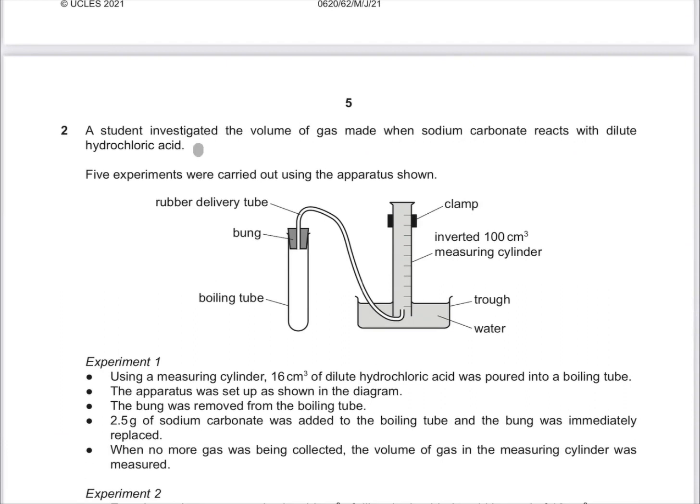Hydrogen sulfate is made with sodium carbonate and hydrochloric acid. Five experiments were carried out using the apparatus shown. This is the rubber delivery tube, this is the bung, the boiling tube. This is the water.